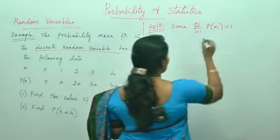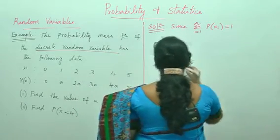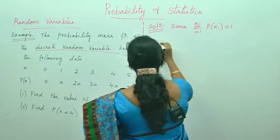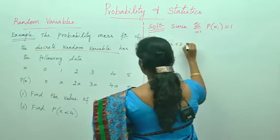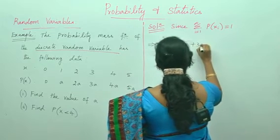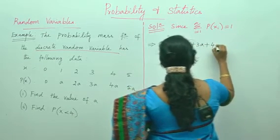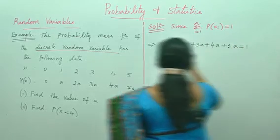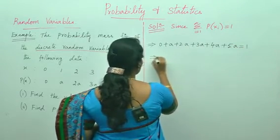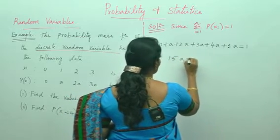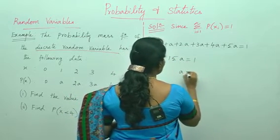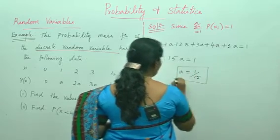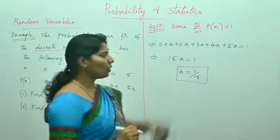First condition: the sum of P(xi) equals 1. From this we can write down 0 plus a plus 2a plus 3a plus 4a plus 5a. When you add all these you will get 15a equals 1, whereas a equals 1 by 15. Therefore, the value of a is 1 by 15.